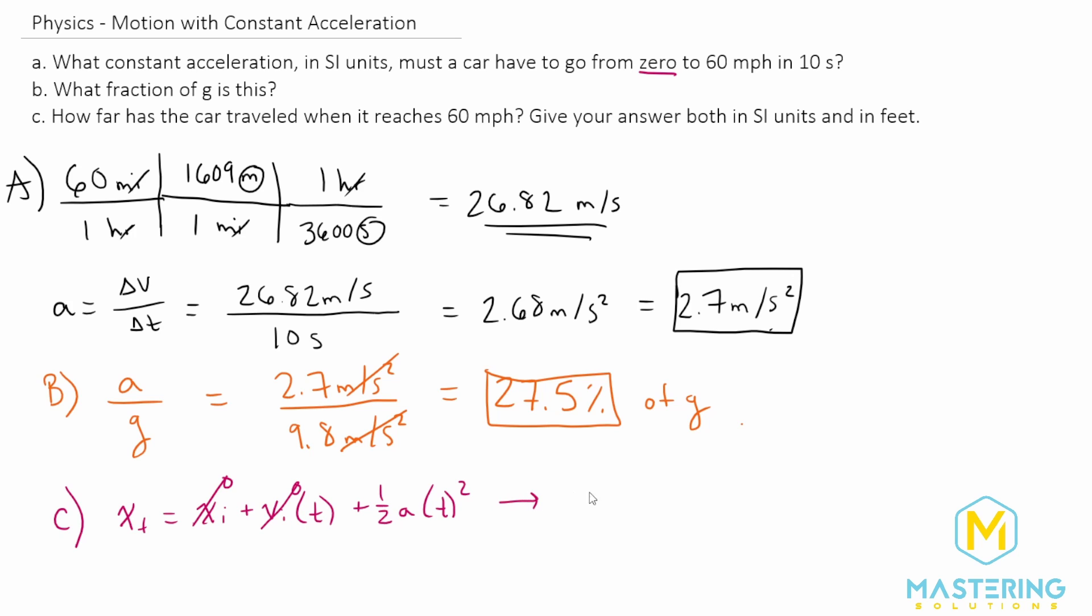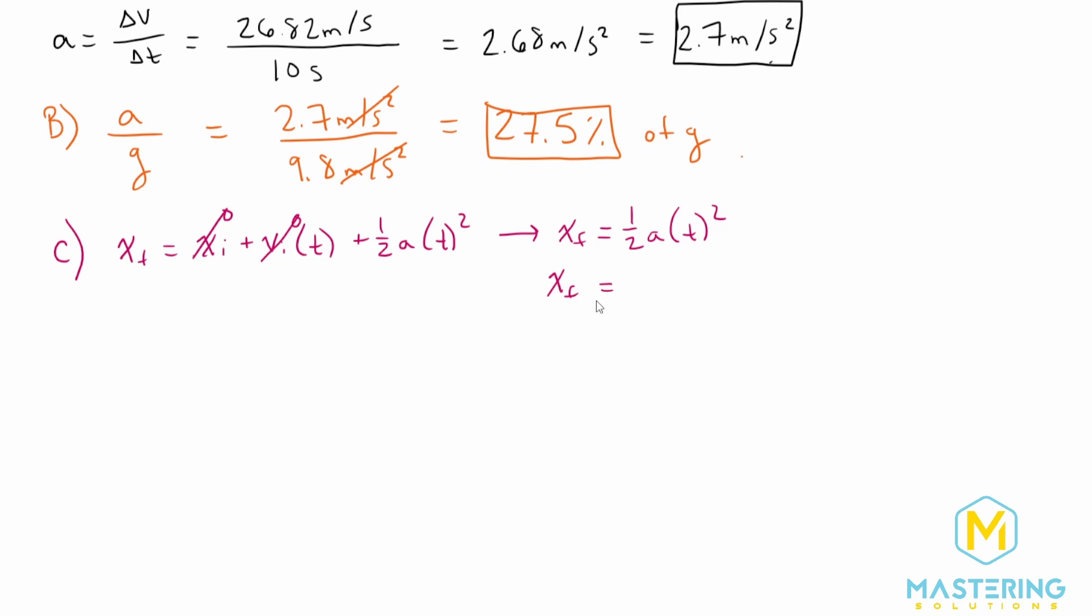So now what we're left with is x final—what we need—is equal to one half the acceleration times the time squared. So now if we plug this in, we have x final equals one half the acceleration, which we just found was 2.7 meters per second squared.